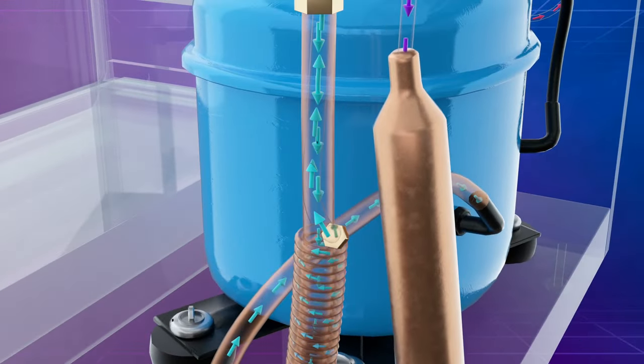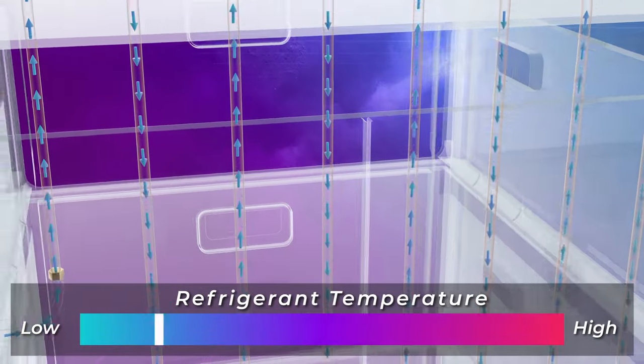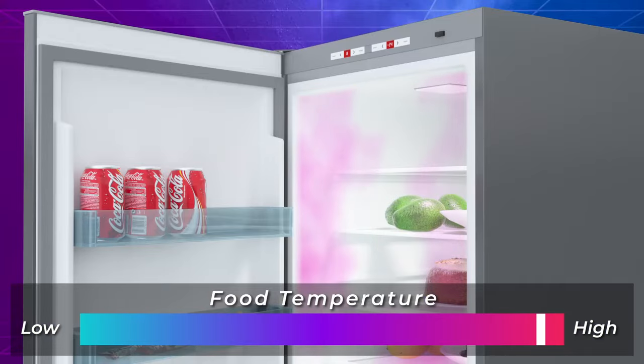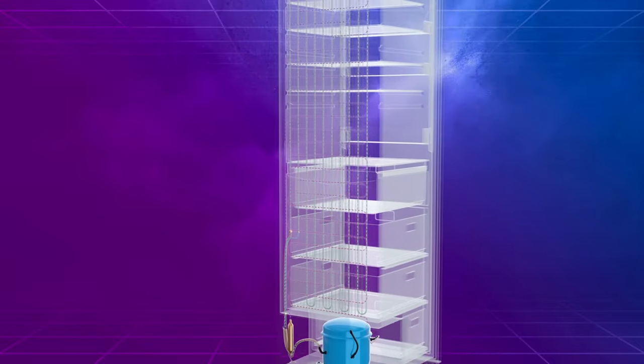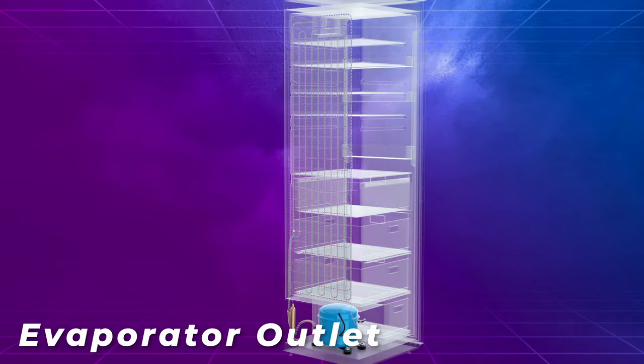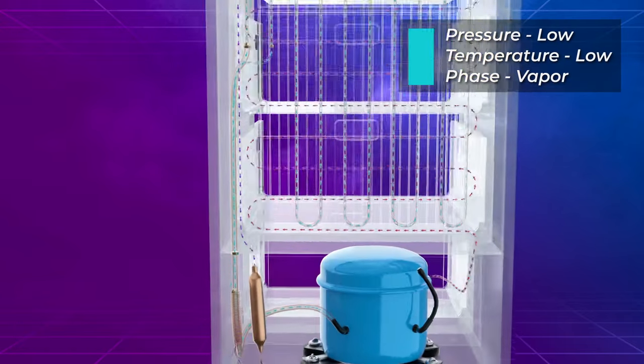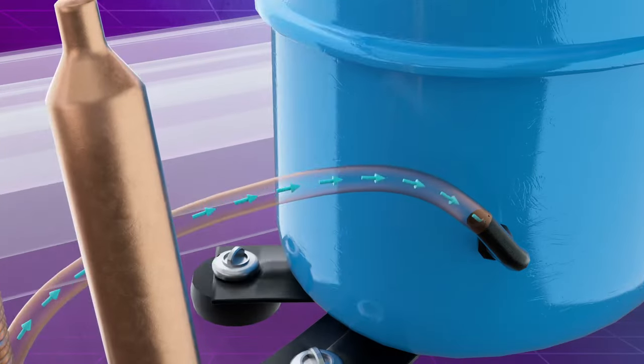The evaporator coil is located inside the refrigerator and the heat from the air inside is absorbed into the refrigerant. This cools the air inside the fridge. During this process, the refrigerant is boiled and evaporates, exiting the evaporator as a low-pressure, low-temperature vapor. It then returns to the compressor and the cycle starts again.